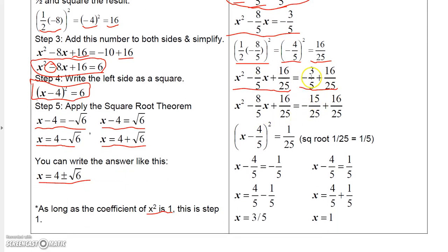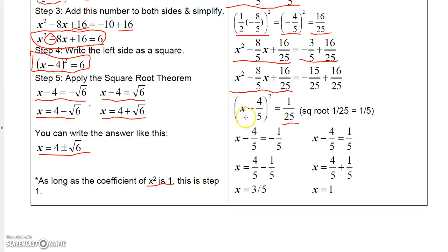To combine the two numbers on the right, I need a common denominator of 25. I multiply 3-fifths by 5 over 5, giving negative 15 over 25. Then negative 15 over 25 plus 16 over 25 is 1 over 25. On the left, adding 16 over 25 turns it into a perfect square trinomial: x minus 4-fifths, quantity squared.